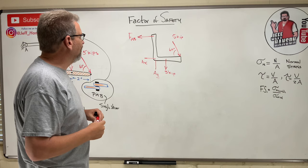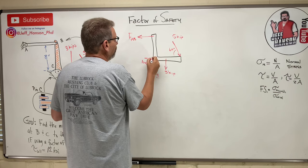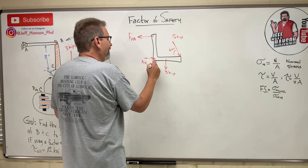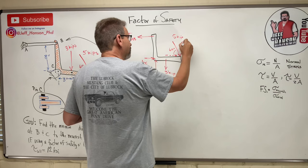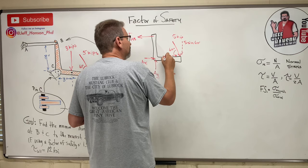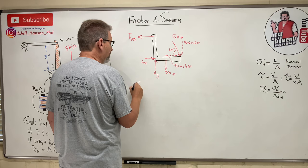At point C, that's a pin connection, which gives us components Ay and Ax. I don't know which way Ax goes, so I'll put it in a direction and if I'm wrong it'll just be negative. Ay has to be uphill. The 5-kip force at 60 degrees gets broken into two components: 5 sine 60 and 5 cosine 60.